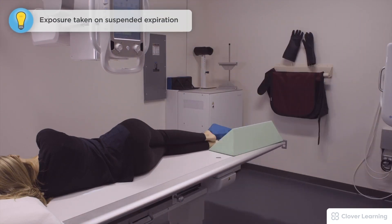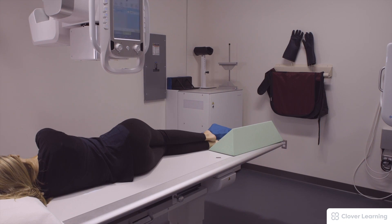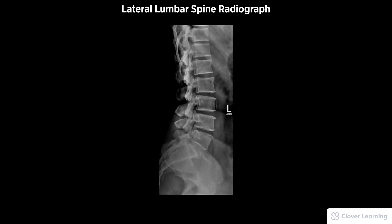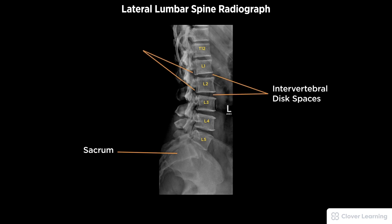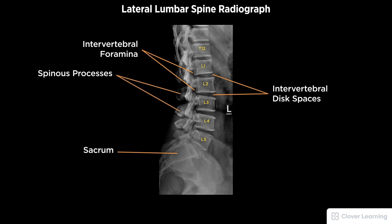Patient, please take a big deep breath and blow your breath all the way out and hold your breath. A diagnostic lateral lumbar spine radiograph must be free of motion and rotation. Demonstrated anatomy to include from the 12th thoracic vertebrae to the sacrum, open intervertebral disc spaces and intervertebral foramina from L1 to L4, and spinous processes in profile with proper visualization of soft tissue and bony detail.